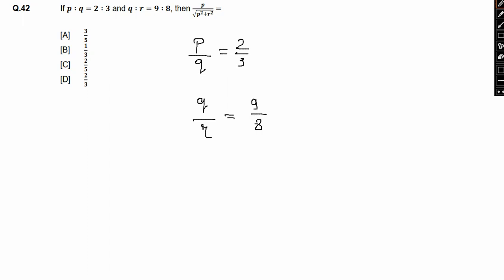Now we have to make this particular value and this value equal. So I will simply multiply the numerator and denominator by 3. So what we will have here? 6 by 9. Therefore I can write p is to q is to r is nothing but 6 is to 9 is to 8.